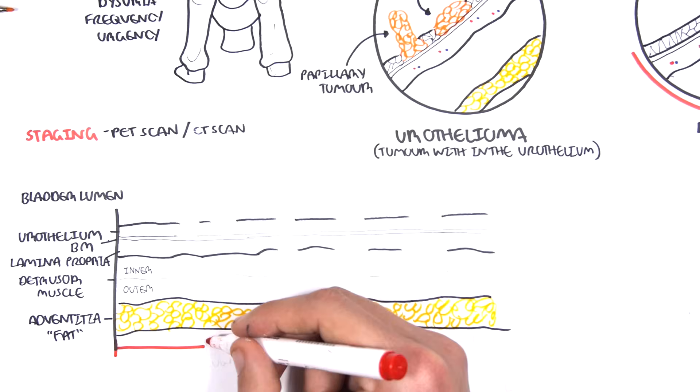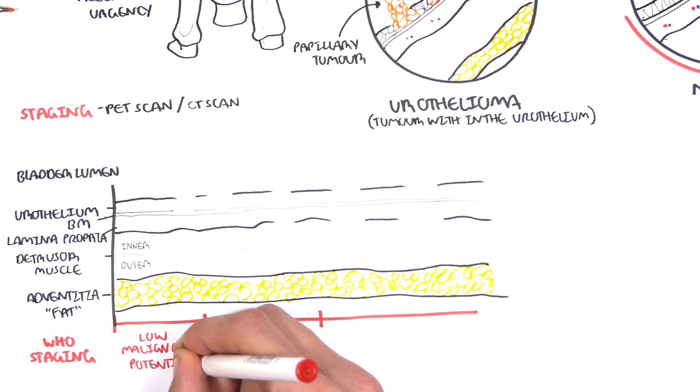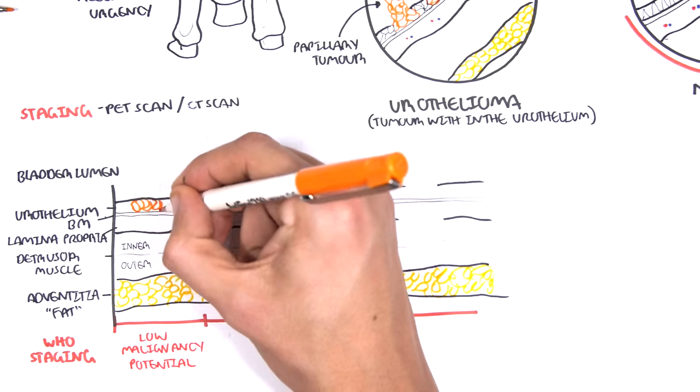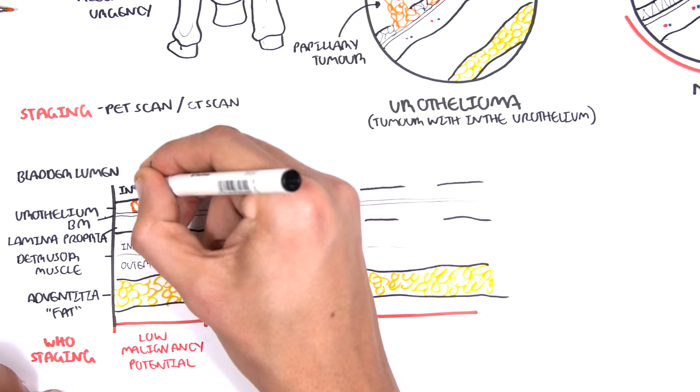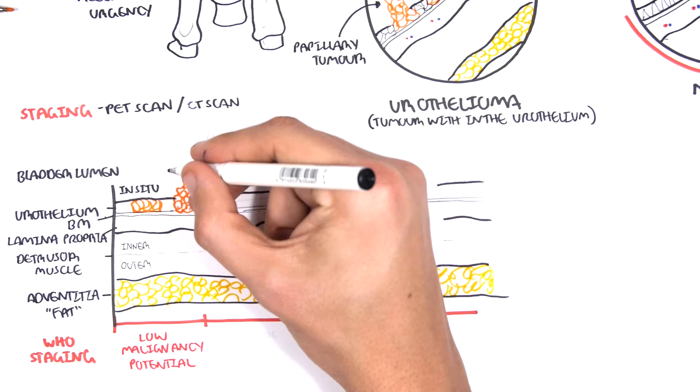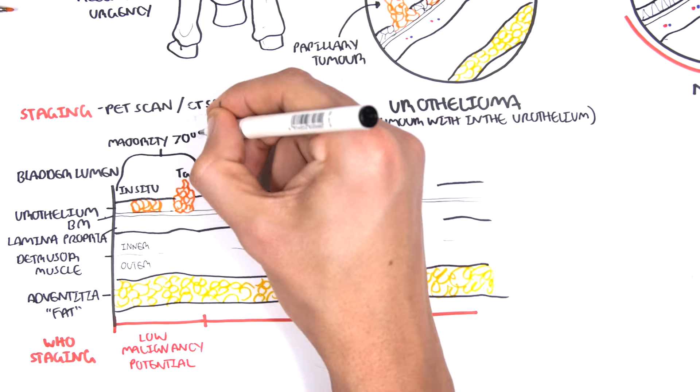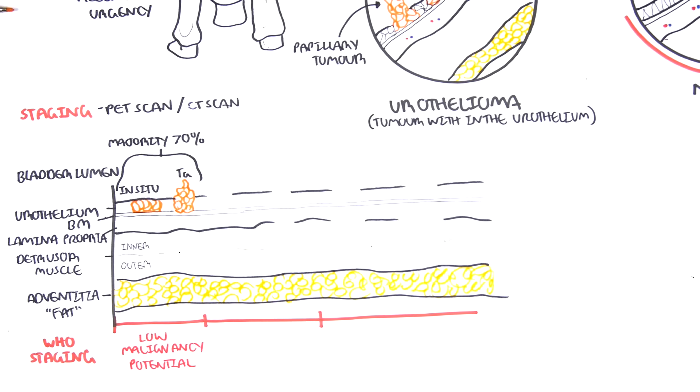The World Health Organization staging of bladder tumors include low malignancy potential, which include carcinoma in situ or TA, which include sessile or papillary tumors. The low malignancy potential makes up the majority of bladder tumors seen.